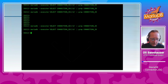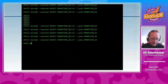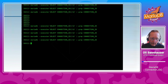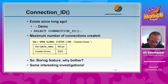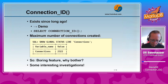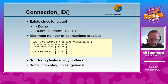I connect again and connection ID becomes 84, 85, 86, 87. So we see the trend when using connections. Every connection inside a MariaDB database gets its own connection ID, which is a unique number that is continuously increasing.